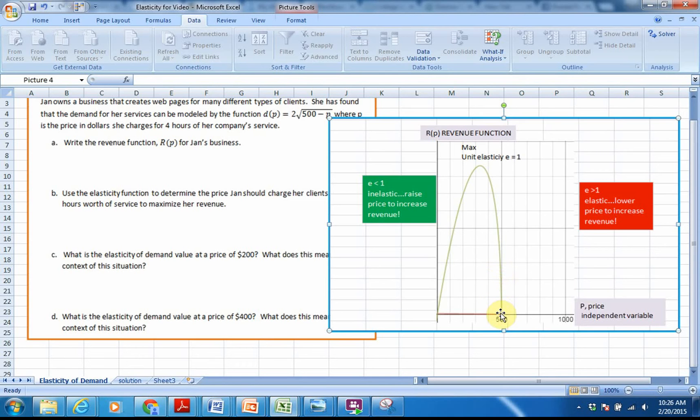However, once we hit our maximum value, or we hit 1 for elasticity where our maximum revenue occurs, the values here begin to go greater than 1. That means that in order to achieve maximum revenue, we would have to lower the price to increase the revenue. Remember that price is our independent variable. You may want to stop and look at that for a little bit just to make sure you understand.